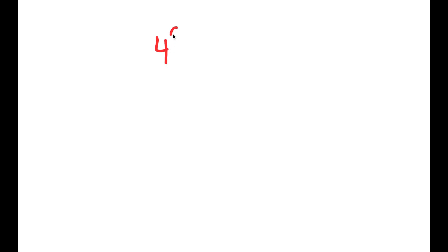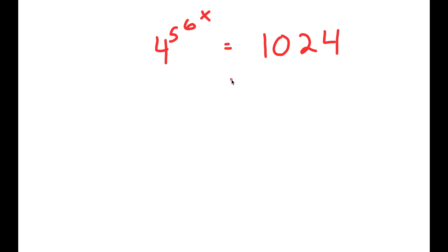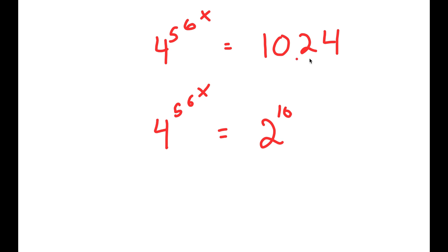In this video, I'm going to be solving the equation 4 to the power of 5 to the power of 6 to the power of x is equal to 1024. I'm going to first start by rewriting this as 4 to the power of 5 to the power of 6 to the power of x is equal to 2 to the power of 10, because 1024 is 2 to the power of 10.